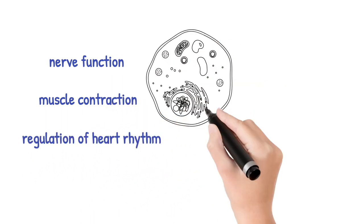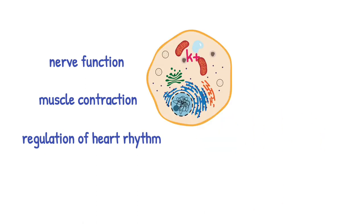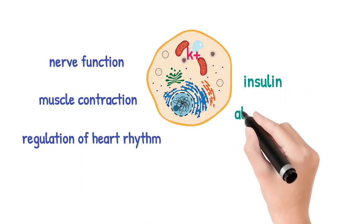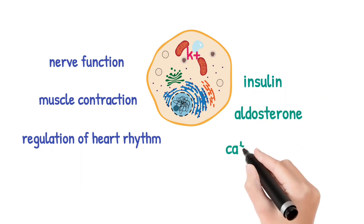The majority of potassium in the body is found inside cells, with only a small amount circulating in the blood. The balance of potassium is tightly regulated by several hormones, including insulin, aldosterone, and catecholamines.